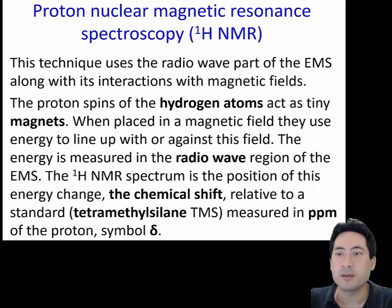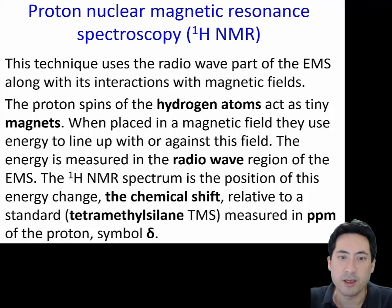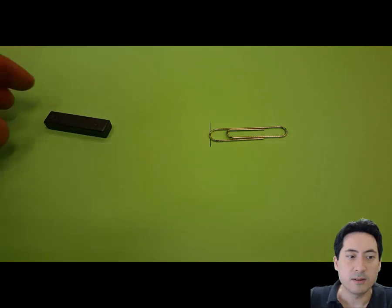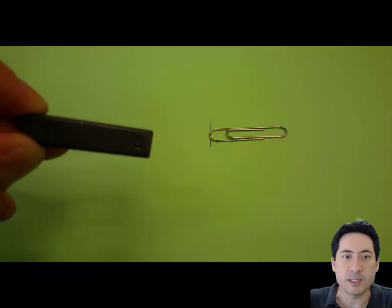The next method we can use to analyze what sort of compound we have is proton nuclear magnetic resonance spectroscopy, HNMR. And this time we're using the radio wave part of the electromagnetic spectrum. And so in this particular case, it's the spins of the hydrogen atoms in the presence of a magnetic field that influence the way that radio waves interact with it. And so we call this a chemical shift, and we relate this to a standard, which is tetramethylsilane, and we measure it in parts per million of the proton using the symbol delta.